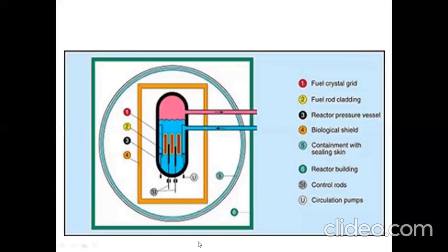Additionally, there are control rods and circulation pumps. This was all about shielding in nuclear power plants. In the next class, we will discuss the effect of radiation on humans, radioactive pollution, and types, causes, and effects of radiation. I hope you liked this video — please like it if you did. Thank you, and have a nice day.